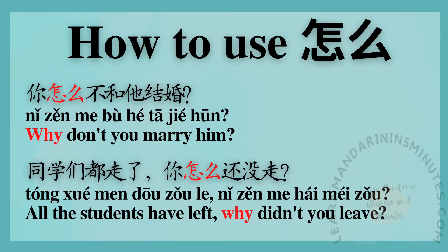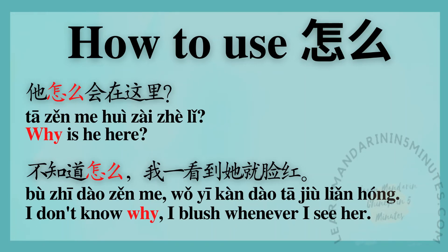你怎么不和他结婚? — Why don't you marry him? 同学们都走了? 你怎么还没走? — All the students have left. Why didn't you leave? 她怎么会在这里? — Why is she here?